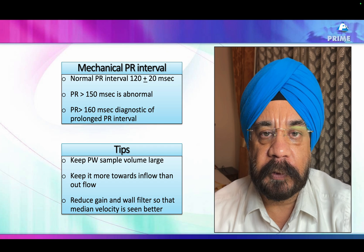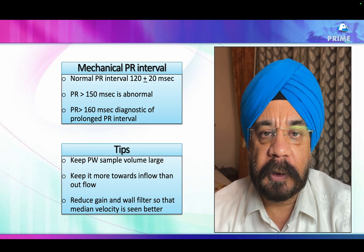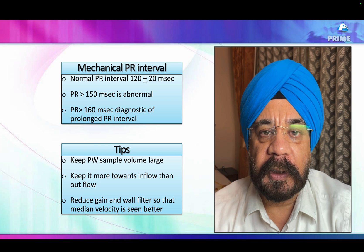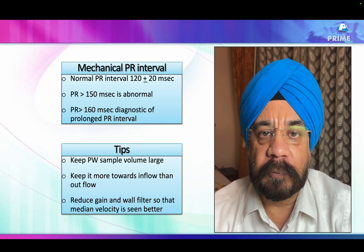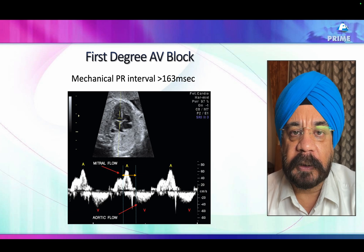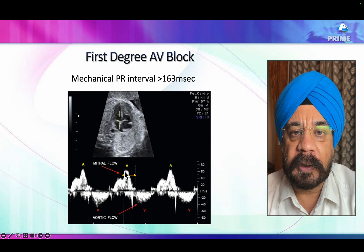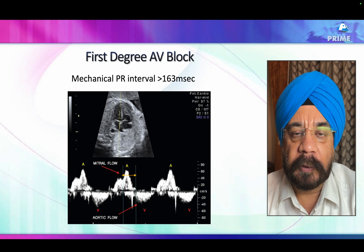To measure the PR interval, we place a pulse wave Doppler sample in the LV inflow and LV outflow region. We make the sample size large enough to capture both LV inflow and outflow signals by placing it close to the anterior mitral leaflet and LV outflow tract. We then calculate the distance from the start of the A wave to the start of the V wave. In this patient, the interval was 163ms, confirming first degree AV block.